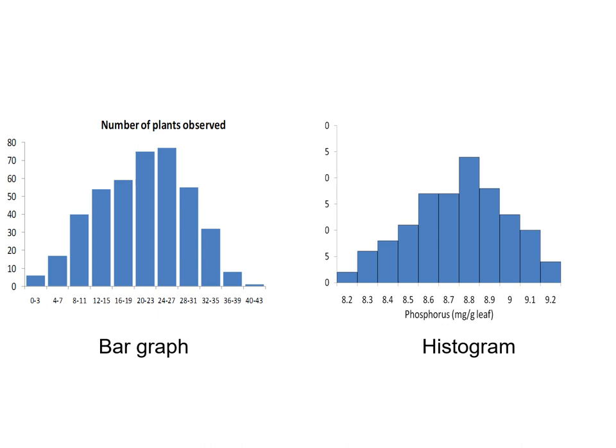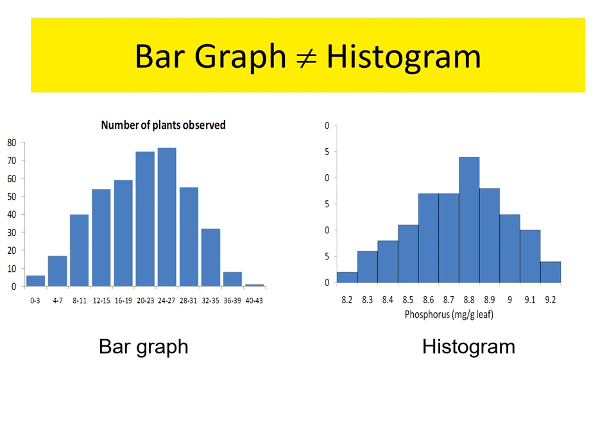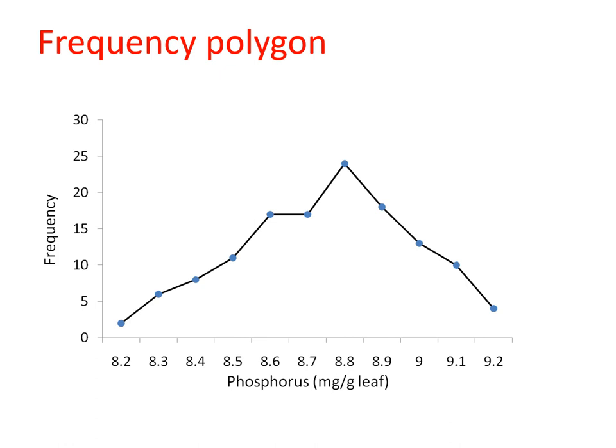If you put a dot at the middle of each vertical bar in the histogram — which represents the midpoint — and connect all of the dots, you now get a different type of graph which we call the frequency polygon. The points here represent the midpoints of the bars in your histogram.